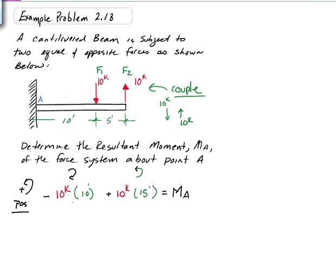So if we do the math, we get minus 100 kip feet plus 150 kip feet equals the moment about point A, or we get 50 kip feet equals the moment about point A.